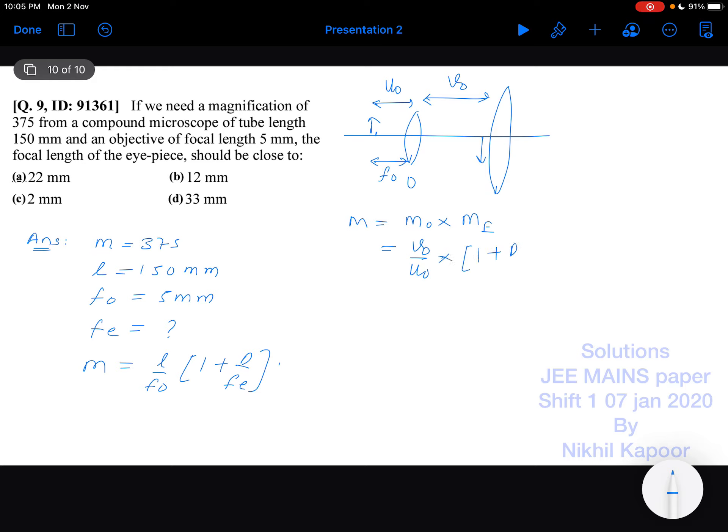This is very common because this acts like a simple microscope as the image is formed very close to eyepiece. So this would be the length of the tube because the distance between the two lenses is nothing but the length of tube. This is fo because this is kept very close to the focus, that's why uo in bracket 1 plus d upon fe.